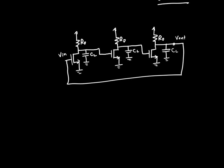The overall transfer function is easiest to find by recognizing that since the input resistance of a MOSFET gate is infinity, the stages are isolated from each other. The transfer function of an individual stage, HI, is equal to its DC gain A0 — which is in general GM times RD in parallel with the output resistance — divided by (1 + jω·RD·CL). Since we assume drain resistances and load capacitances are all equal, we cube this transfer function to get the total open-loop transfer function.